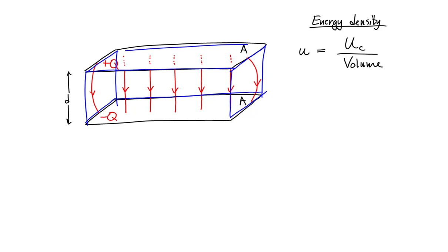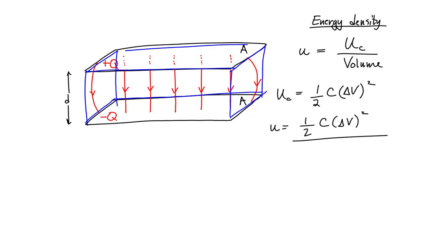Let's figure out what we need to determine the energy density due to this electric field. We need the potential energy stored by a capacitor, which we've previously shown is equal to one-half the capacitance times the potential difference across the capacitor plates squared. So the energy density equals one-half C times V squared, divided by the volume of the region of space. For this parallel plate capacitor, our region of space is rectangular.